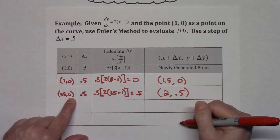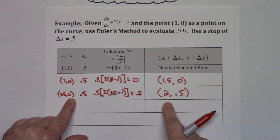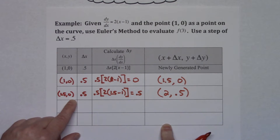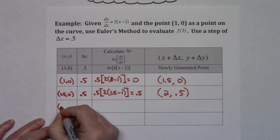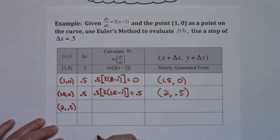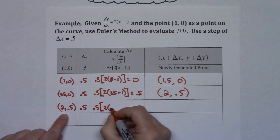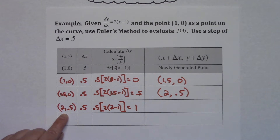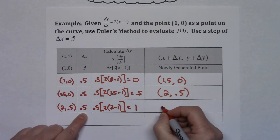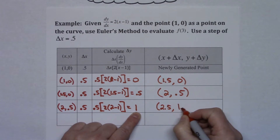I need to keep doing this until I get an x value of 3 so that I can approximate the value of f(3) using Euler's method. Taking that point (2, 0.5) down, with delta x of 0.5: calculating delta y gives 0.5 times 2 times (2 minus 1), which comes out to about 1. So 2 plus 0.5 gives me 2.5, and 0.5 plus 1 gives me 1.5. My new point is (2.5, 1.5).